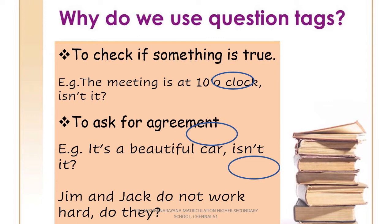Look at the examples given. 'The meeting is at 10 o'clock. Isn't it?' So here, you just confirm whether the meeting is at 10 o'clock. Look at the other examples: 'It's a beautiful car, isn't it?' and 'Jim and Jack do not work hard. Do they?' Here, you want the listener to agree or disagree with your statements. Thereby, question tags are used at the end of these statements.